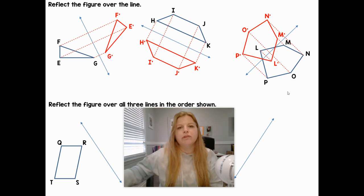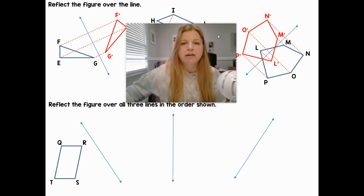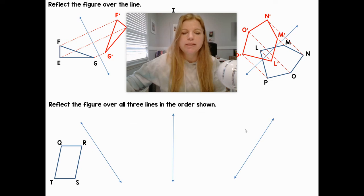The last thing I just need to show you is when you take a figure and you reflect it more than once. If I took QRST and I reflected over the first line, following the same procedures, construct my perpendicular lines of the same measure and create my new image.